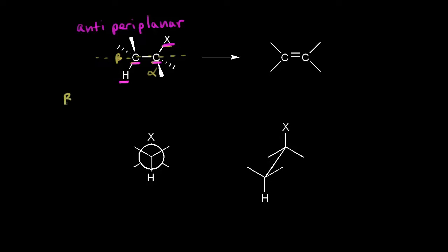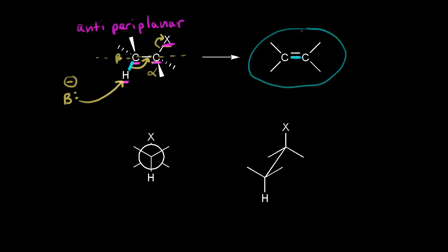Our strong base comes along in our E2 mechanism, a negative charge, and takes our beta proton. At the same time, these electrons move in to form our double bond, and these electrons come off onto our leaving group. Those electrons in blue move in to form our double bond, and we form an alkene.